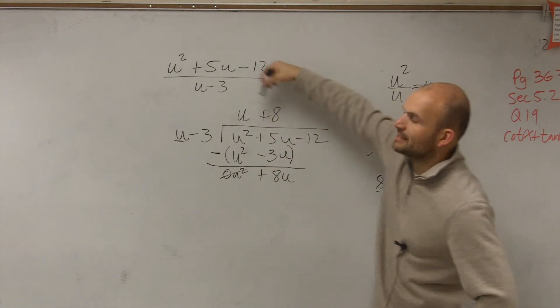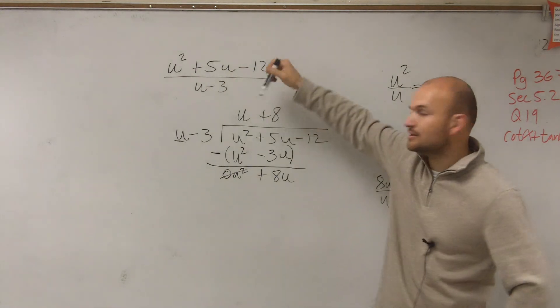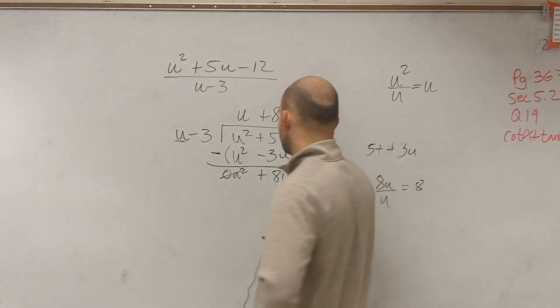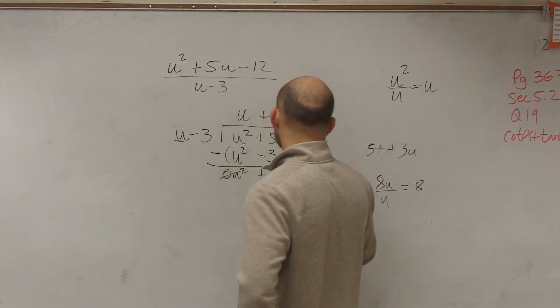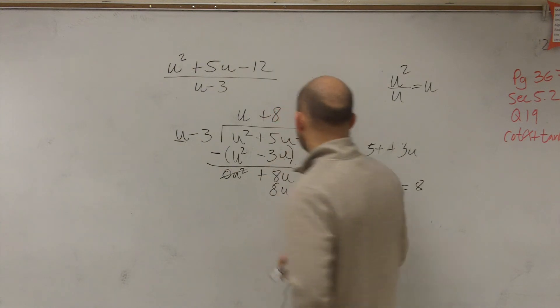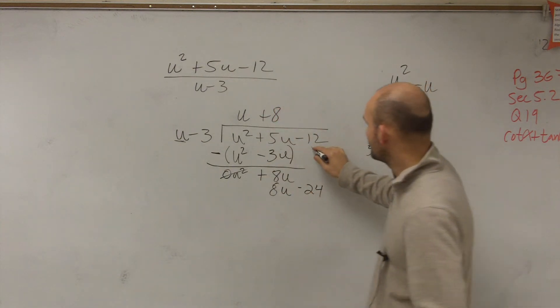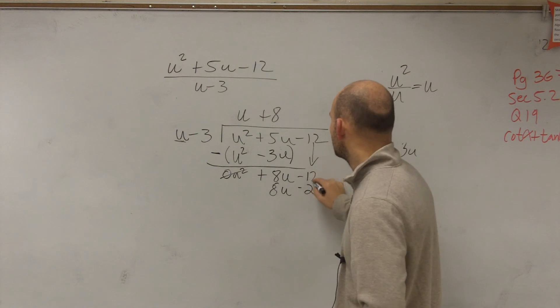Then again, we make sure we multiply this by both terms in our divisor. So 8 times u is 8u, 8 times negative 3 is negative 24. Well, I don't have anything to subtract the negative 24 from, so I bring down the negative 12.